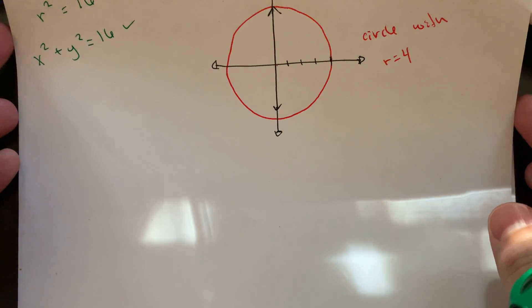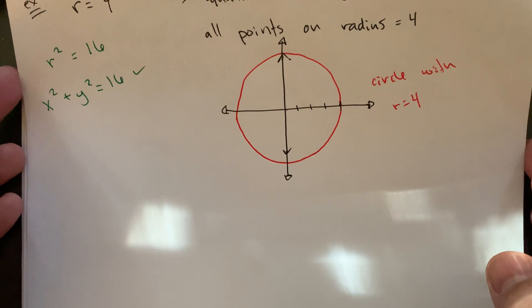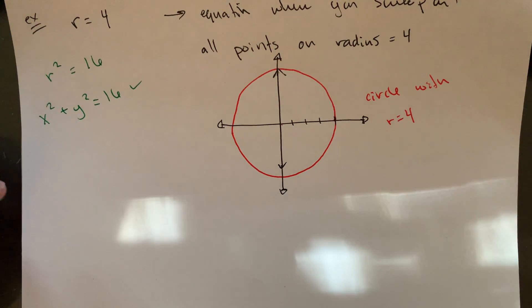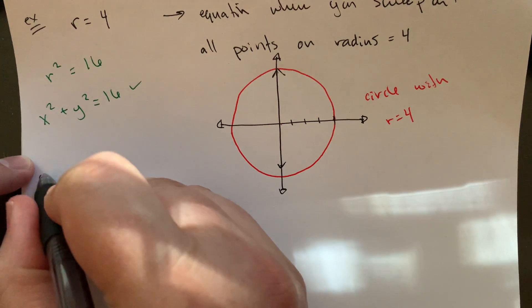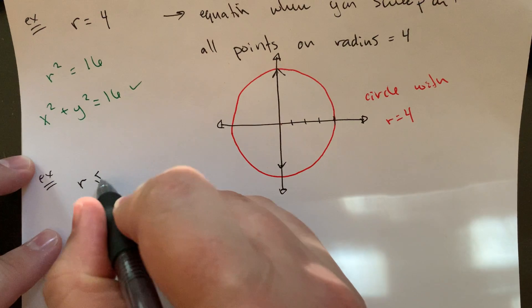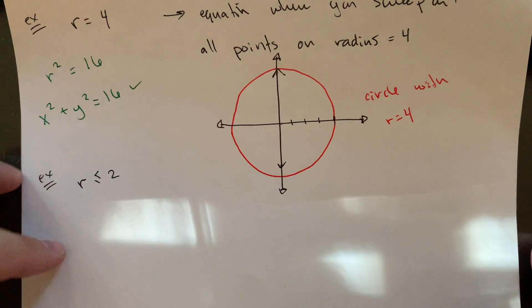The homework has some interesting examples where you can actually do sketches where you're doing not just equations here, but even like little inequalities. So I just want to show you briefly what that would maybe look like, maybe you have something where the radius is like less than or equal to two.